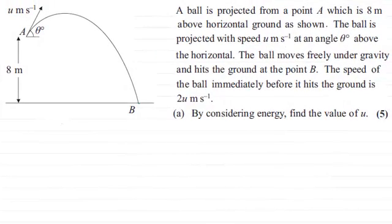Hi there. Now in this question we're given that a ball is projected from point A, which is 8 meters above horizontal ground as shown. And the ball is projected with a speed of u meters per second at an angle of theta above the horizontal.